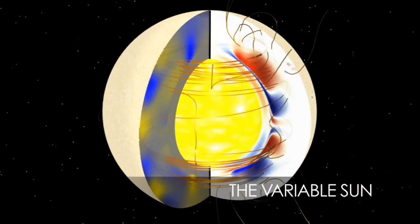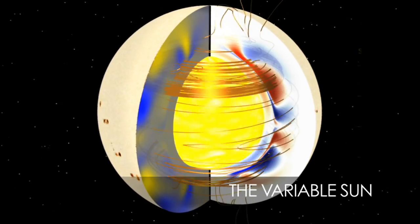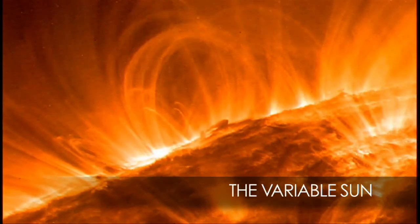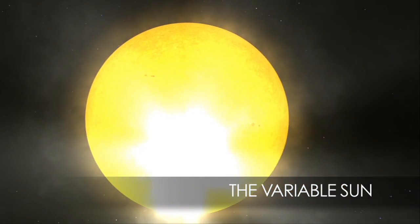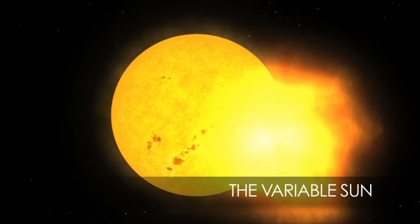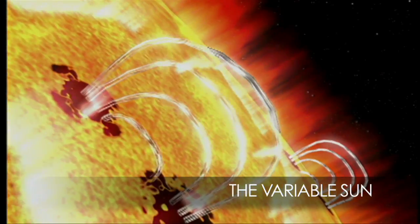But what causes the Sun to vary so much? A closer look at its structure may reveal the answer. Studying the magnetic field and surface activity such as sunspots, solar flares, and coronal mass ejections may provide vital clues.